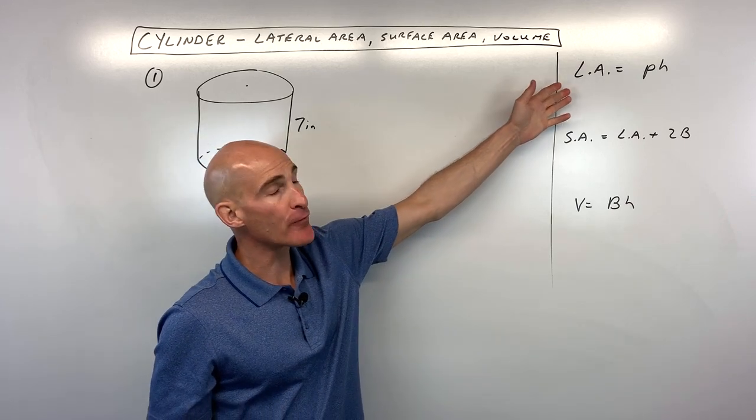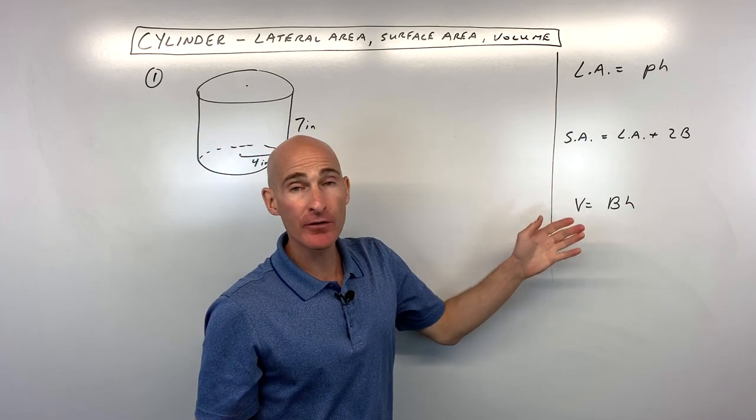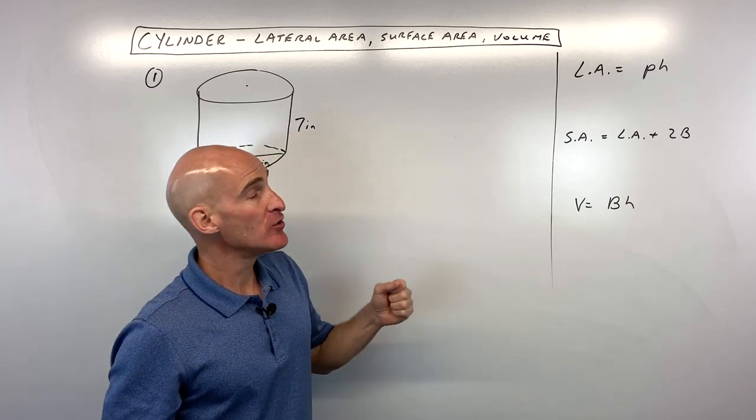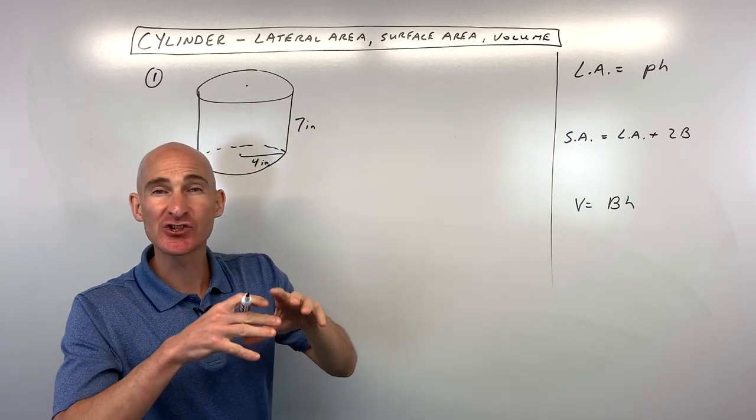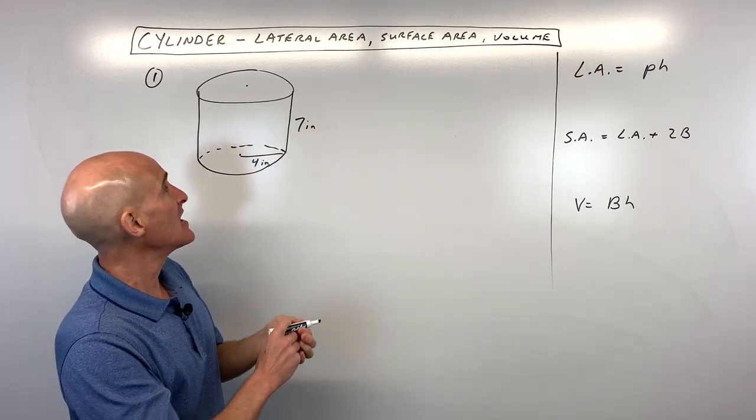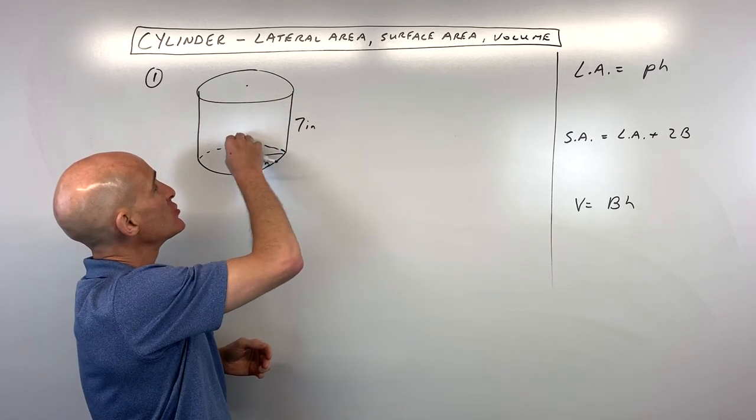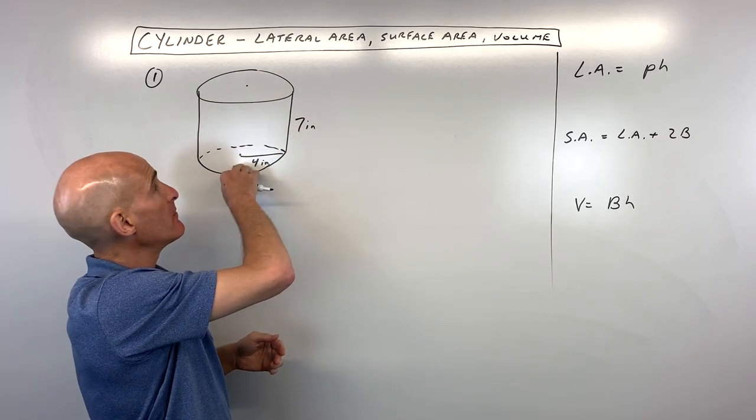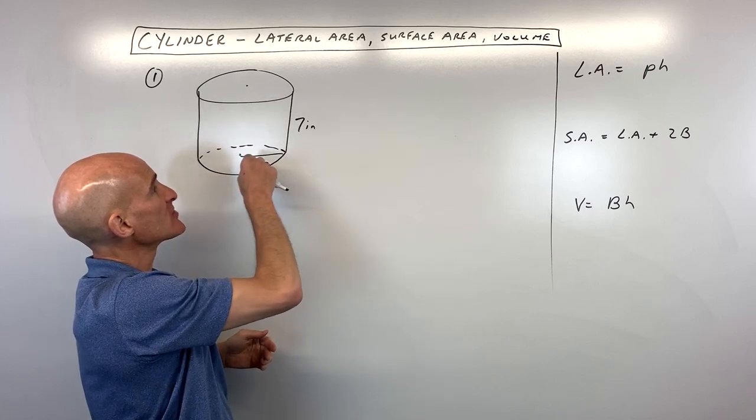The first thing we want to talk about are the formulas. What's interesting, if you're familiar with prisms, you can think of a cylinder kind of like a circular prism, in a sense, because you've got these two parallel and congruent bases, which in this case they're circles, separated by the height.